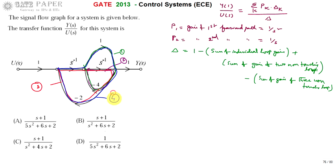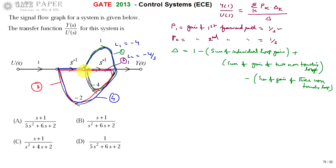L1, the gain of the first loop, is 1 × (−4) = −4. L2, the gain of the second loop, is −4 × (1/s) = −4/s. L3, the gain of the third loop (shown in red), is (1/s) × (1/s) × (−2) = −2/s².